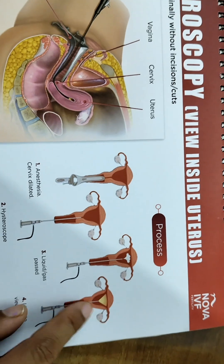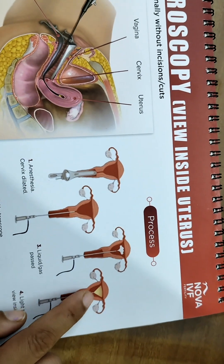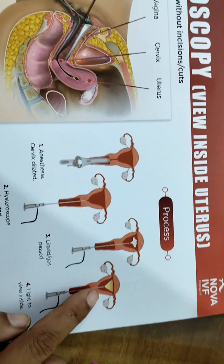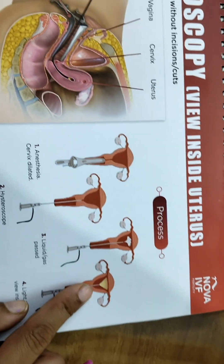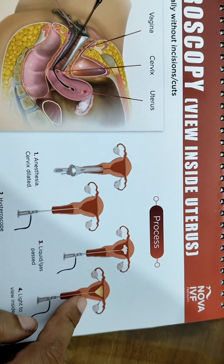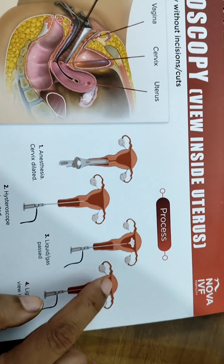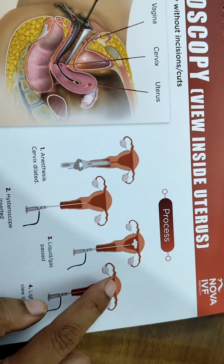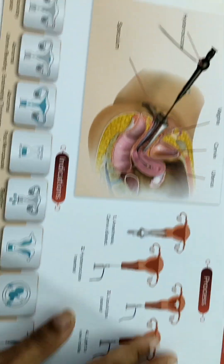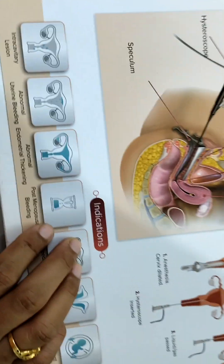We always look on all the walls of the uterus to rule out any kind of lesions or infections. We always rule out any uterine anatomical abnormality, and we always look at both the ostia.